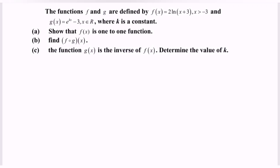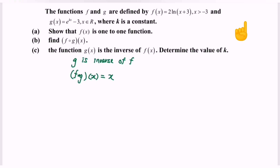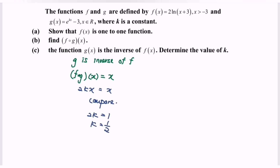Part C: the function g(x) is the inverse of f(x), meaning f∘g = x. From part B, f∘g = 2kx = x. Comparing coefficients, 2k = 1, so k = 1/2. Therefore, g(x) = e^(x/2 - 3).